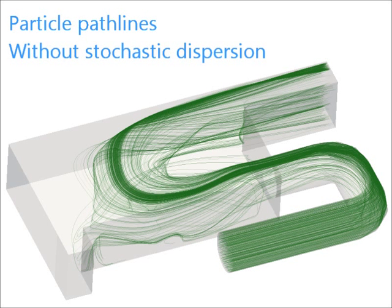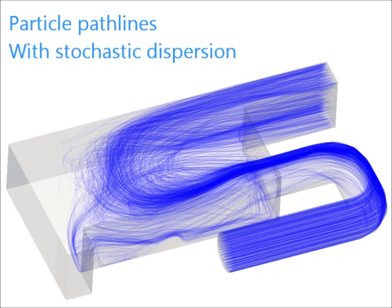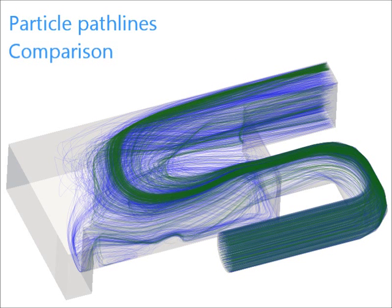Here, the green lines are the particle tracks without dispersion. The blue, more chaotic lines represent the particle tracks with stochastic dispersion.